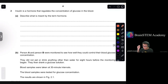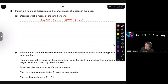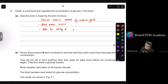Question 2. Insulin is a hormone that regulates the concentration of glucose in the blood. Describe what is meant by the term 'hormone'. A hormone is a chemical substance secreted by endocrine glands. The medium is the blood — blood carries the hormone. Hormones alter the activity of specific target organs.